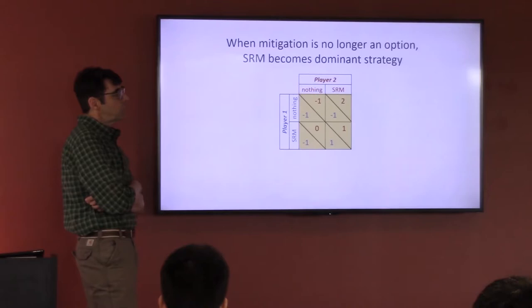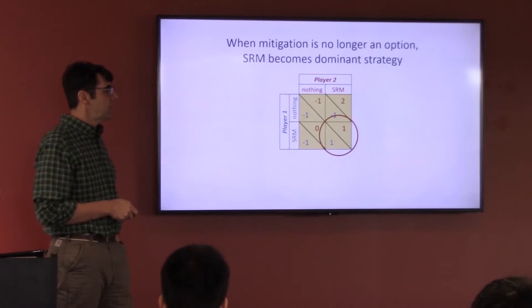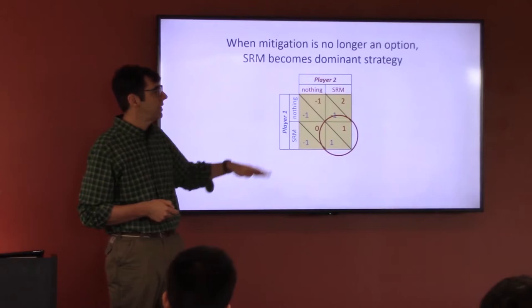If we get to a state in which mitigation is no longer seen as an effective option — if it's too late — then we're considering nothing versus solar radiation management. In that case, solar radiation management would be the equilibrium strategy: both countries implementing it and living with the best possible conditions under that scenario.